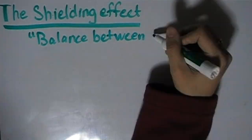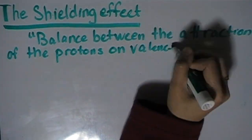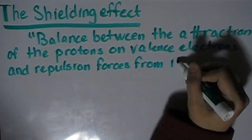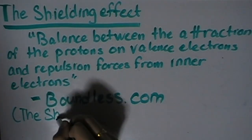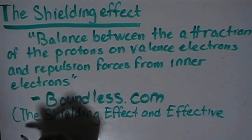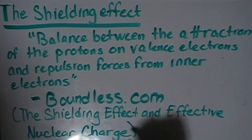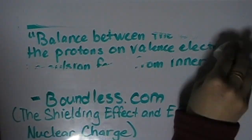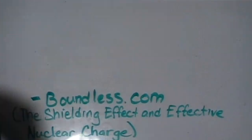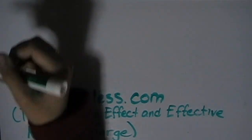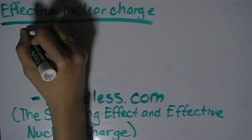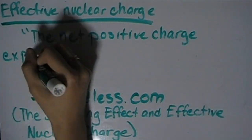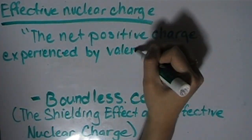To explain the shielding effect, let's go over the definition. The shielding effect is the balance between the attraction of the protons on valence electrons and repulsion forces from inner electrons. On a related note, effective nuclear charge is the net positive charge experienced by valence electrons.